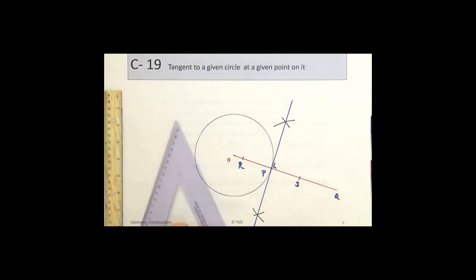And that's our tangent to a given circle at a given point on it. Construction 19.